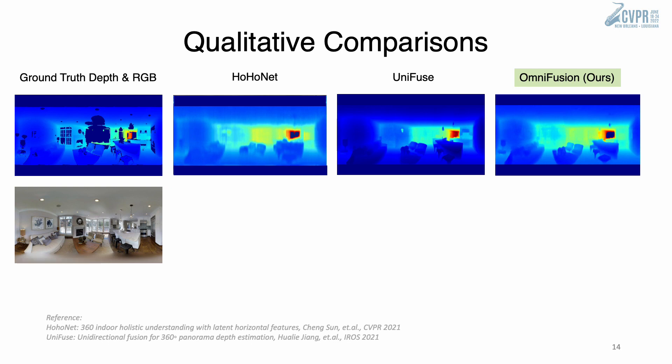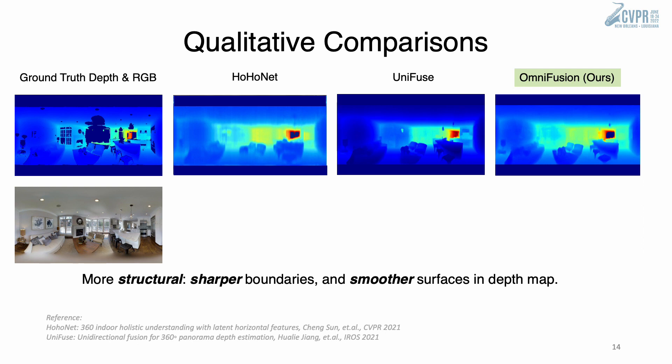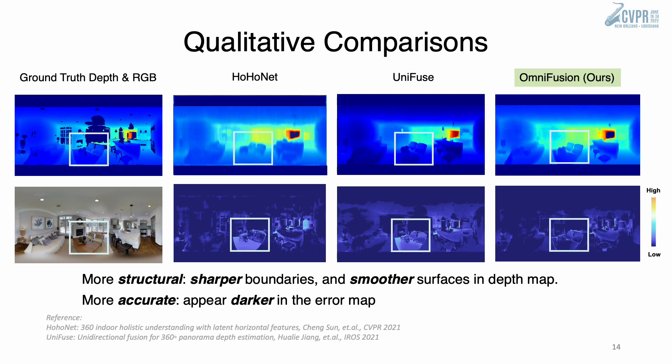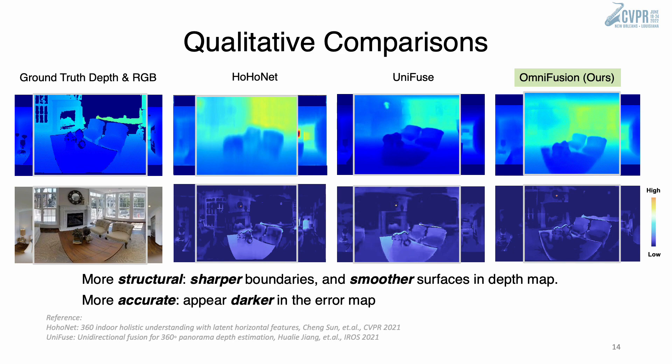Here we show an example of qualitative comparisons between OmniFusion and existing methods. First, we compare the depth maps. Our method shows more structural details, sharper boundaries, and smoother surfaces. Then we compare the error maps. Our method produces more accurate depth and appears significantly darker in the error map. From the zoomed-in view, a better comparison can be seen.